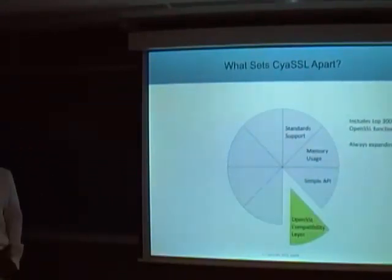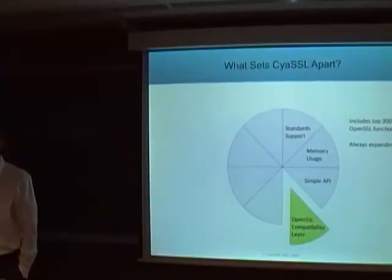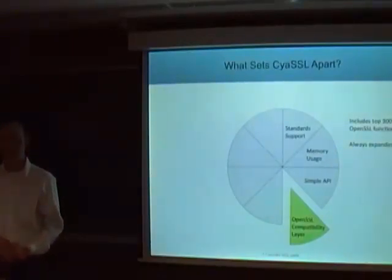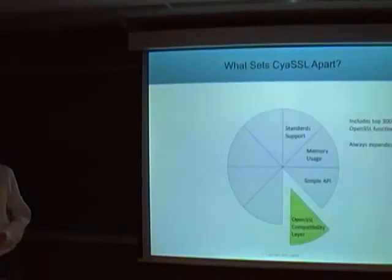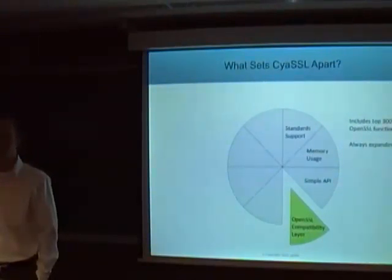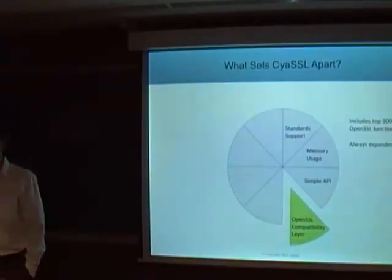The fourth item is our OpenSSL compatibility layer, which contains about 300 of OpenSSL's most commonly used functions. This is dual-purpose. First, for people who are used to using OpenSSL, it'll be the same function names they're used to. Second, it's for ease of porting — because you have the same functions, you can usually just replace OpenSSL with CYASL, and it usually requires very little porting work, depending on the usage of OpenSSL.